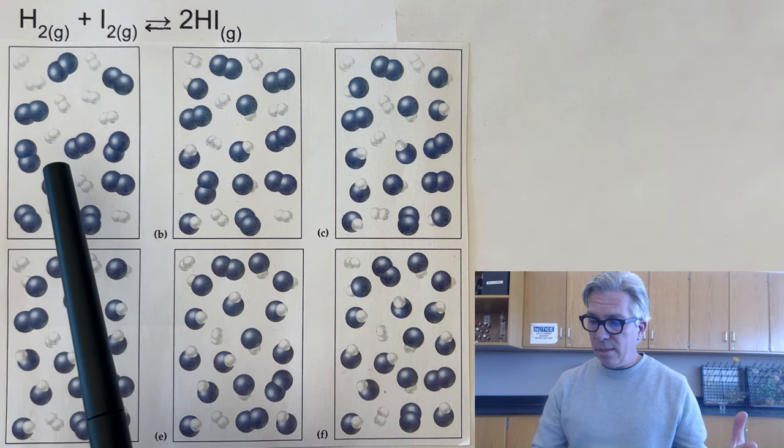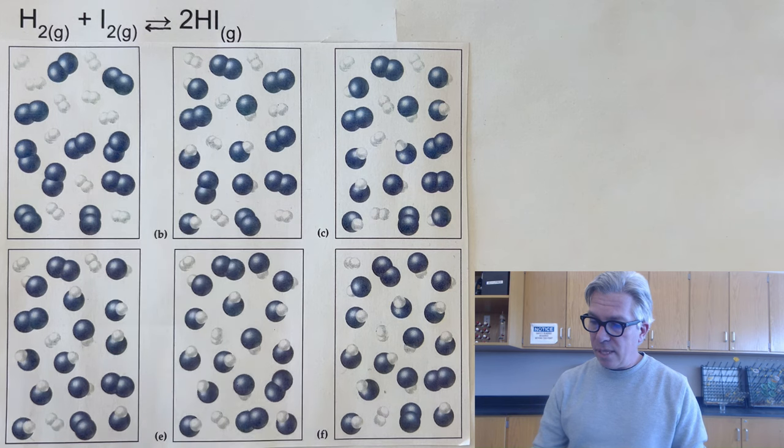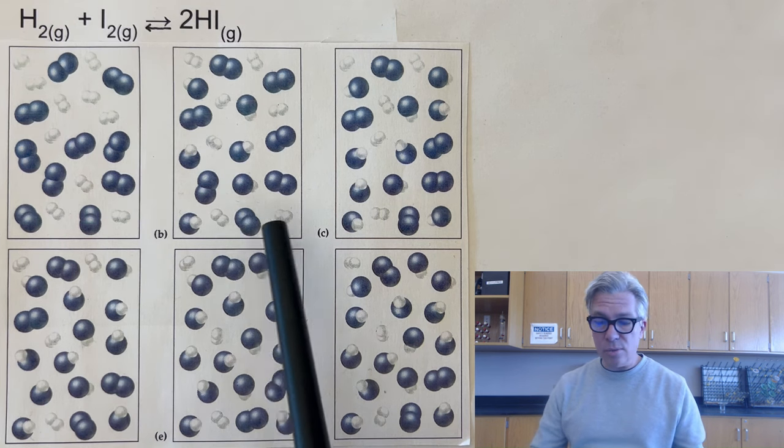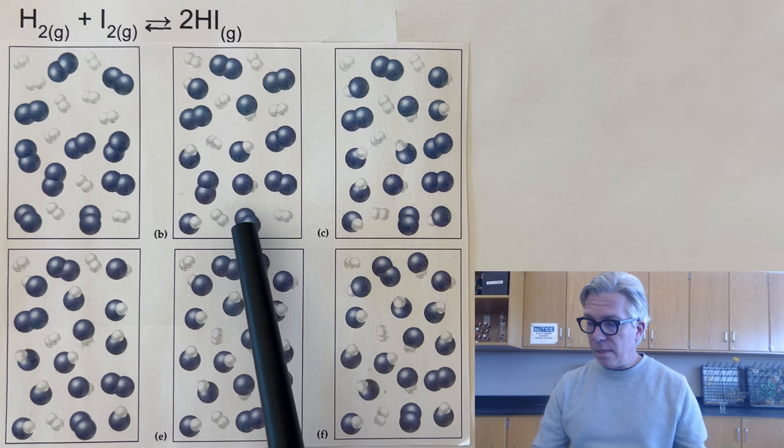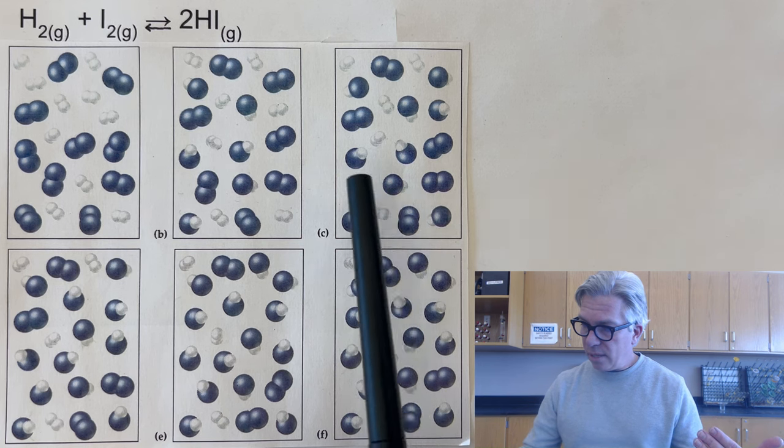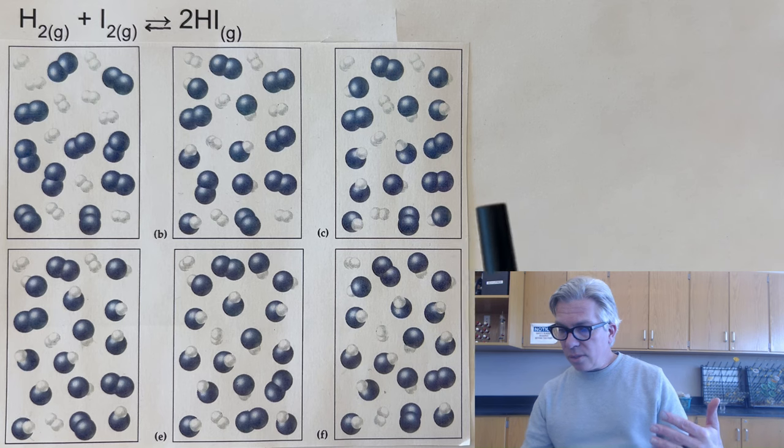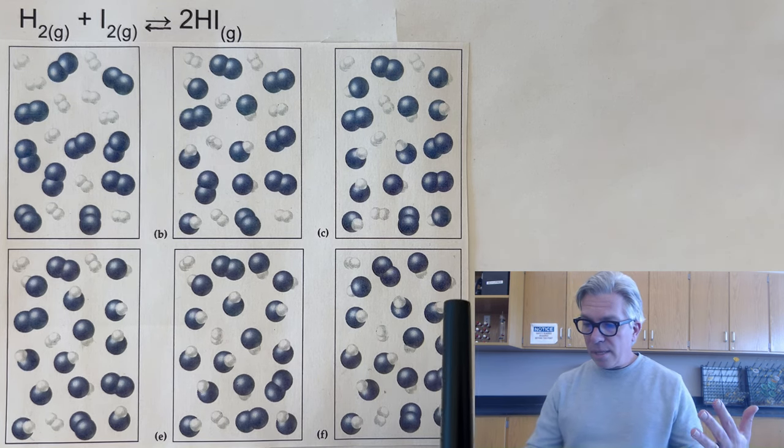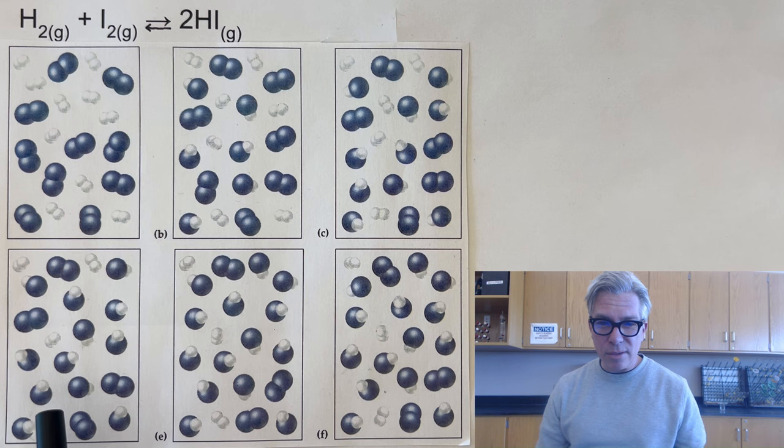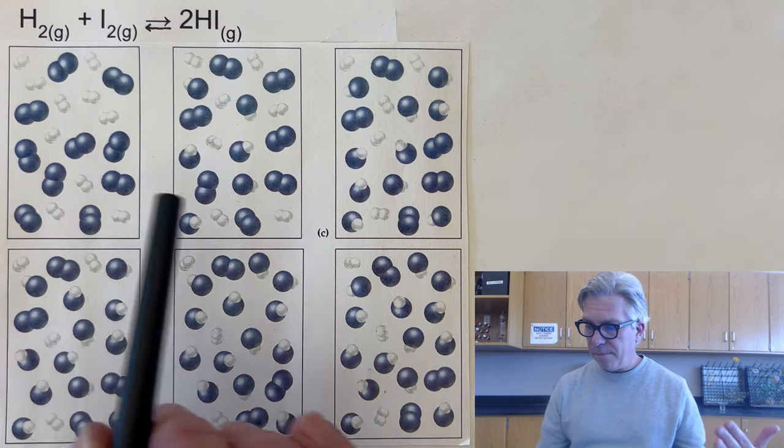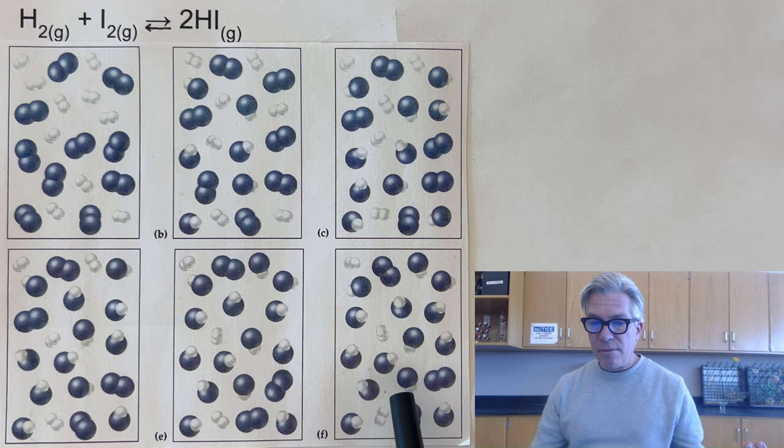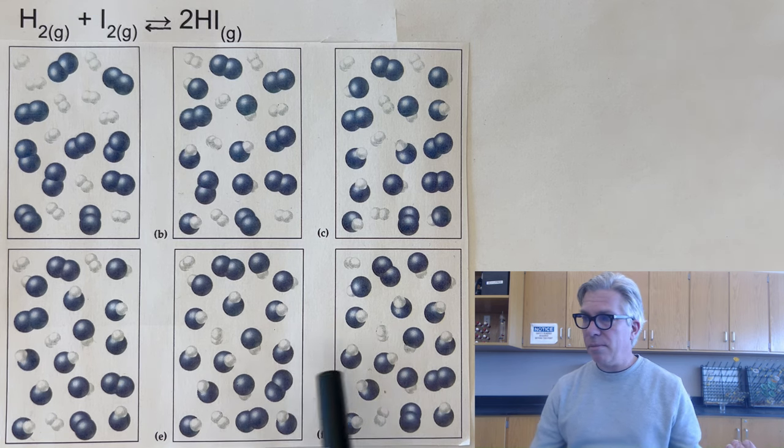Imagine I start with a container that has only the hydrogens, the white ones, and the iodines, the blue ones, and they start reacting. If I follow it along for a while, I see in box number two that there are six of these little hydrogen iodide molecules that have been formed. So the reaction is progressing. We still have some unused hydrogen and iodine there as well. By the time we get to box C, we are up to 10 molecules of hydrogen iodide. Then by the time we get to box D, we've produced a couple more hydrogen iodides. But it seems like the reaction is slowing down a little bit. By the time we get to box E, I count 14 of the HIs. And then in box F, I'm again counting 14 of them. So not much seems to be happening between here and here.